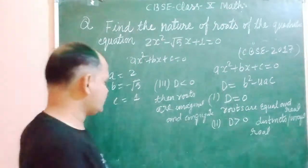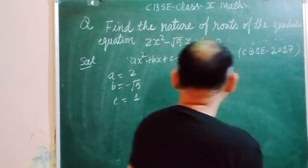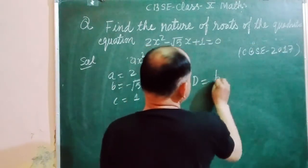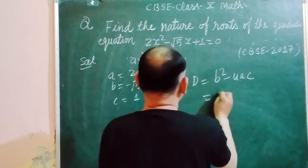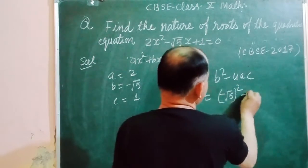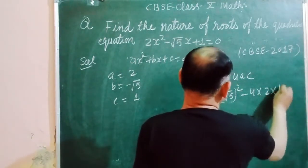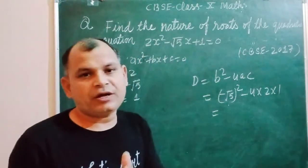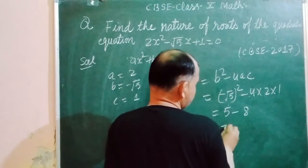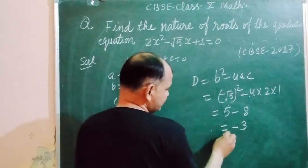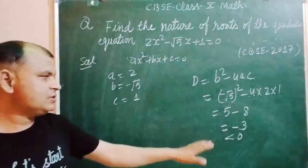Now we find the discriminant. So D = b² - 4ac. So b is -√5, so this is b². 4ac: a is 2 and c is 1. So √5 squared is 5 minus 4 times 2 times 1, and this is 5 - 8 = -3 which is less than 0.